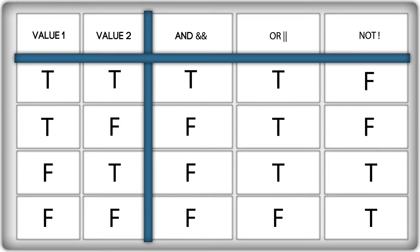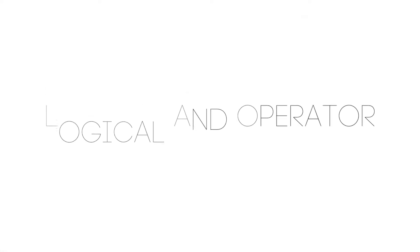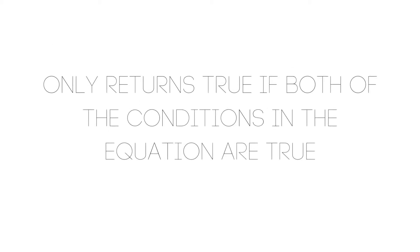Let's get started by defining some of these operators, and maybe you'll see how a truth table can really help you. We're going to start with the logical AND operator. The logical AND operator can only return a value of true if both of the conditions in the equation are true.